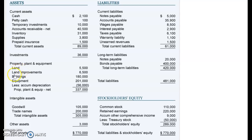Then there are long-term assets that are going to benefit your company for more than a year — things like land, a building, equipment, tools, and trucks. Those are long-term assets in their own section. There are also intangible assets — if you have any patents or trade names, anything you cannot touch, it goes in the intangible section.